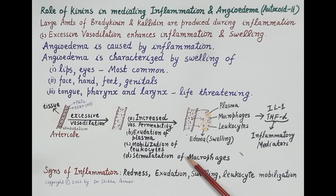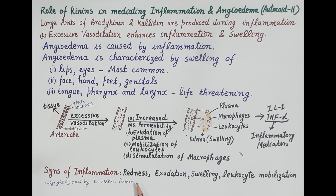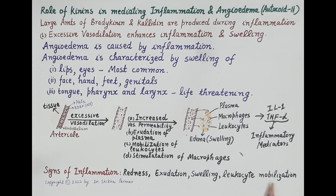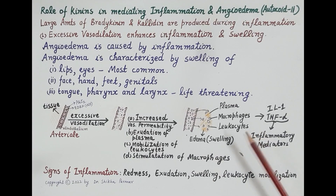Thus kinins are inflammatory mediators, and signs of inflammation include: redness due to vasodilation, exudation of plasma due to increased vascular permeability, swelling due to accumulation of fluid in the tissues, and leukocyte migration. Inflammation causes accumulation of fluid in the tissues, resulting in edema or swelling.